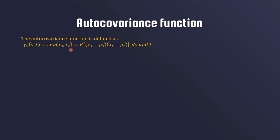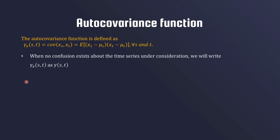We want to look at the covariance of the series at these different time points, so that's why this auto covariance function is a function of these time points. Whenever there is no confusion about the time series under consideration, we will skip the subscript x and just use the notation γ(s,t), where s and t are the time points of interest.